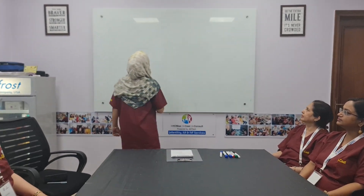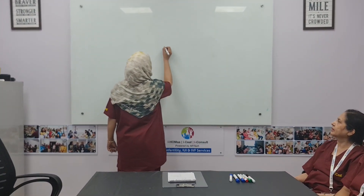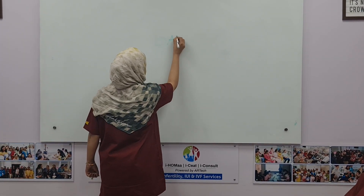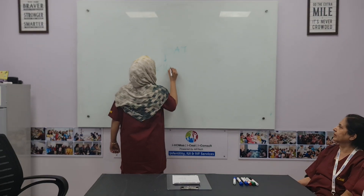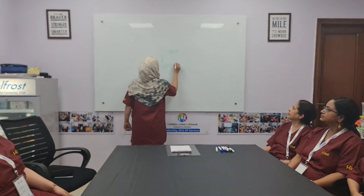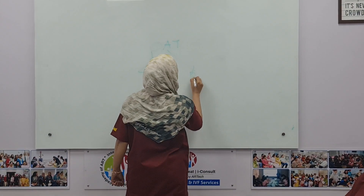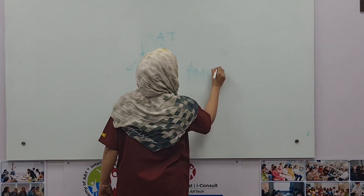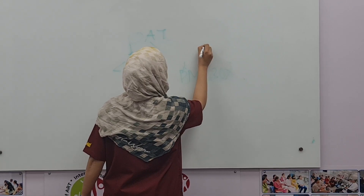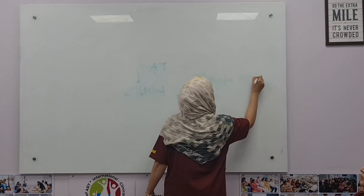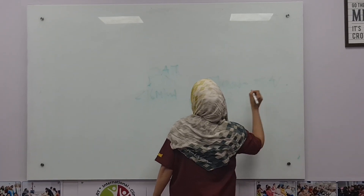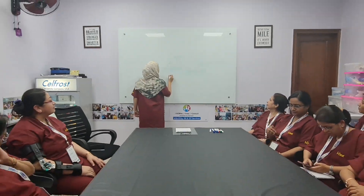Hello everyone, myself Dr. Zahra Ansari from Radhabar. My topic is OAT, which stands for oligoasthenoteratospermia. Oligo stands for sperm count less than 16 million per ml, astheno stands for progressive motility less than 30%, and terato stands for morphology less than 4%.